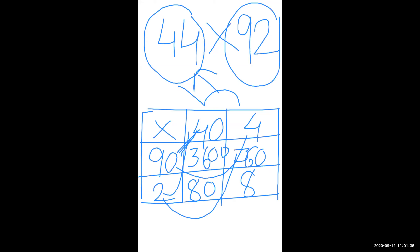Now, what is the next step? You want to find the product. When this type of multiplication is done, you want to add all four boxes together. 3600 plus 360 plus 80 plus 8 — your answer is 4048. The correct answer is 4048.